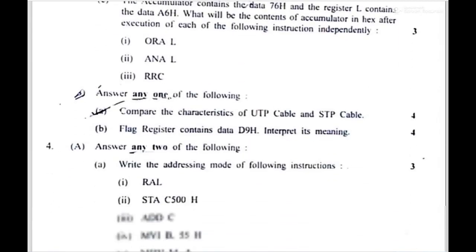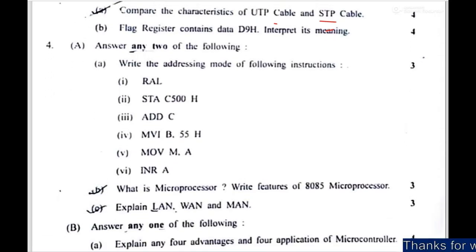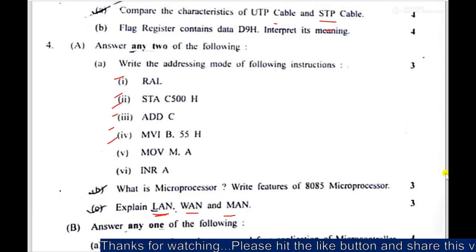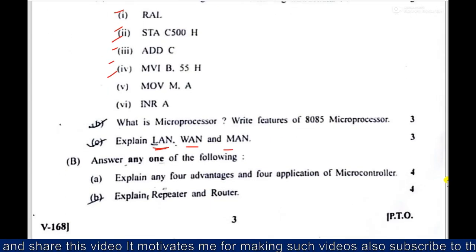Then UTP, STP. Shielded and unshielded twisted pair cable. Flag register. Then this. Addressing modes. Instruction sets. Then LAN, MAN and WAN. Metropolitan. Local area network. Then wide area network.